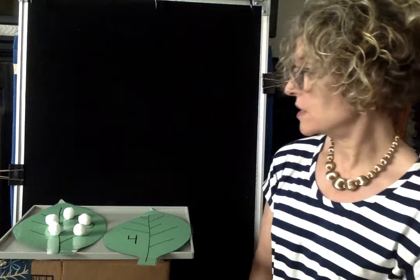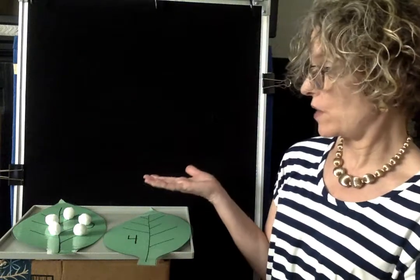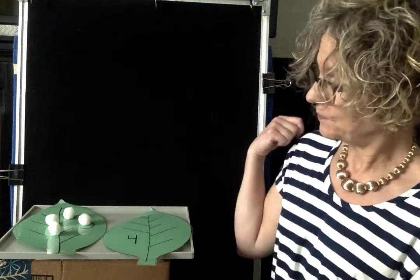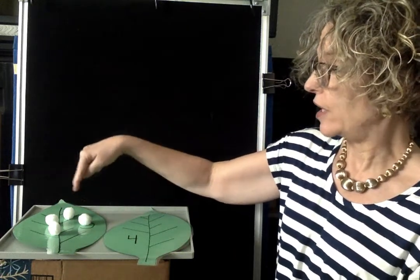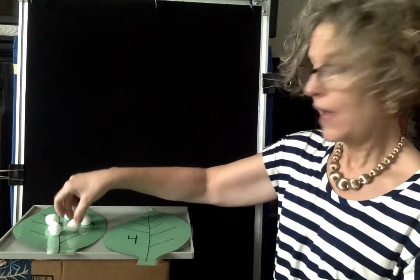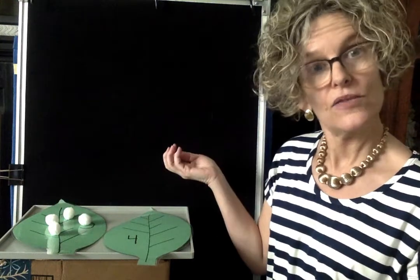But if they can't do it in their head, use the actual objects. You say, well, one less means you have to take one away. So take one away. Now count how many there are. One, two, three, four. We had five. And one less is four.